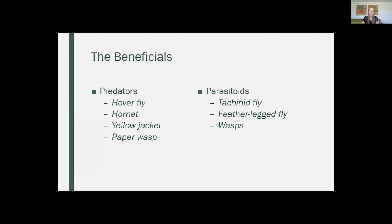So we're talking about beneficials today. I have two types of beneficials I want to talk about: predator beneficials and parasitoid beneficials, and we'll talk about the difference between those in a second. But here's just a brief outline of some of the insects I'm going to go over: we have hoverflies, hornets, yellow jackets, paper wasps, tachinid flies, feather-legged flies, and then a whole load of parasitoid wasps. There's lots of them, but I'm just going to highlight a few of them.